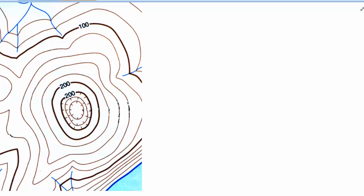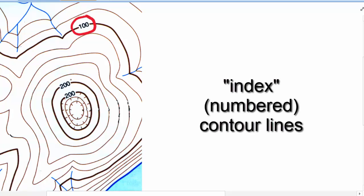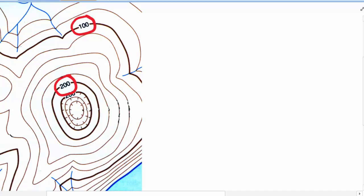In order to determine the contour interval for the map as a whole, we'll need to note the elevations of the contour lines that are numbered. Those are called the index contours. And we'll find two of those at an elevation of 100 and 200.